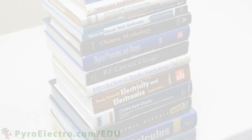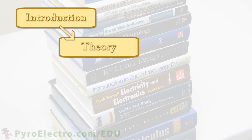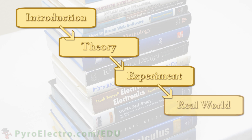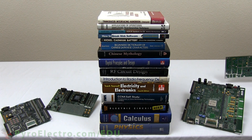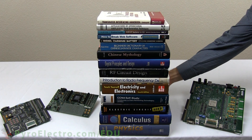Each lesson in this course will follow the same structure. First, an introduction will explain the topic and give some background information. Then in the theory section, we will build up a schematic for the topic and develop the CPLD image using a hardware description language. After that, we will actually build up the circuit and experiment with whether it works and how well it works. And finally, we'll take a look at how the topic relates to the real world. With our learn-by-doing approach, you will be able to learn and do it all.